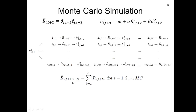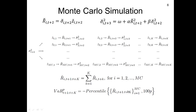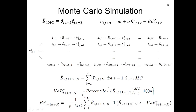Hence we have a distribution of these returns. To compute Value at Risk, we use the distribution and take the 1st percentile of this data series to obtain the 1% VaR for the horizon up to t+k. For Expected Shortfall, we take the returns that are lower than minus VaR and average them out.